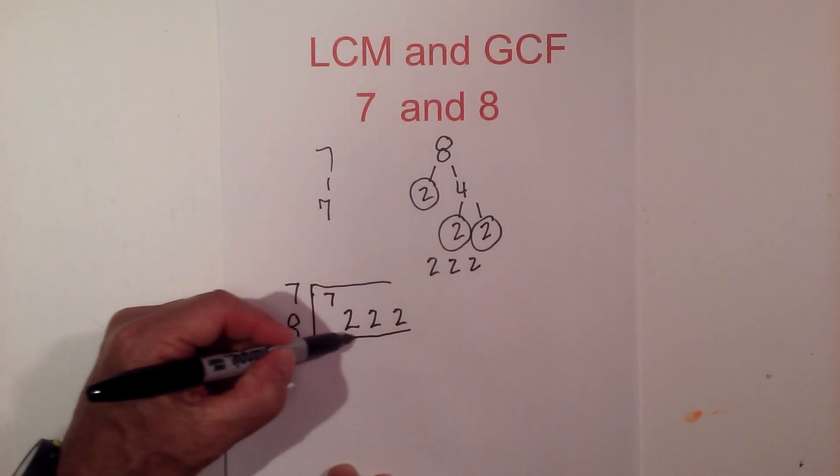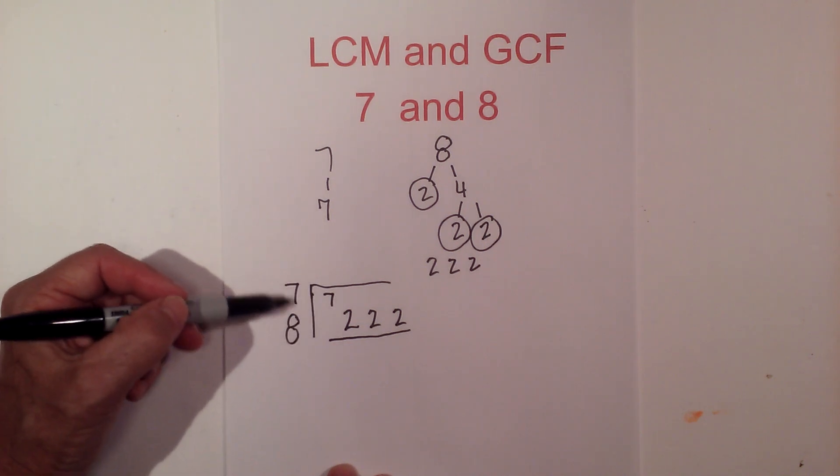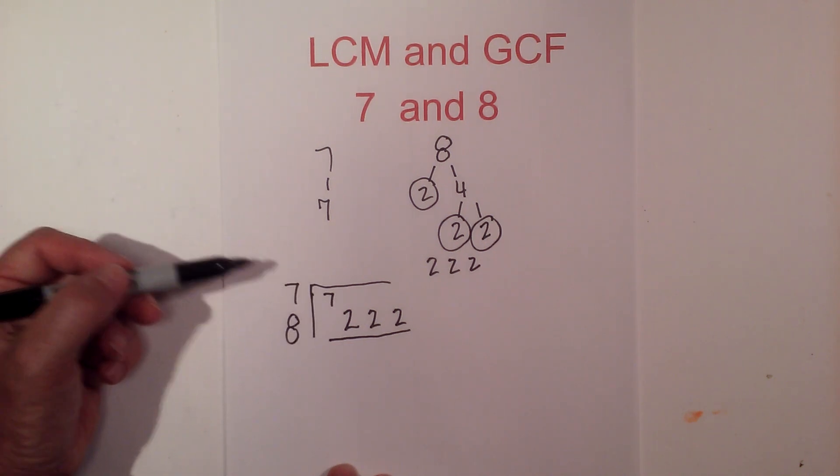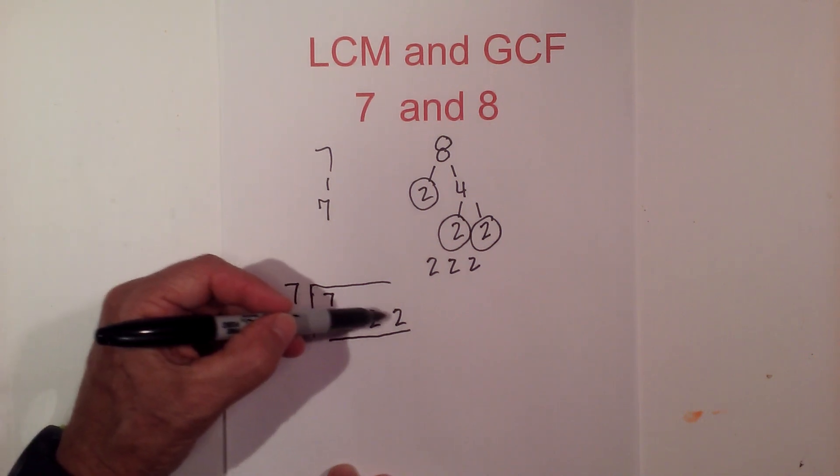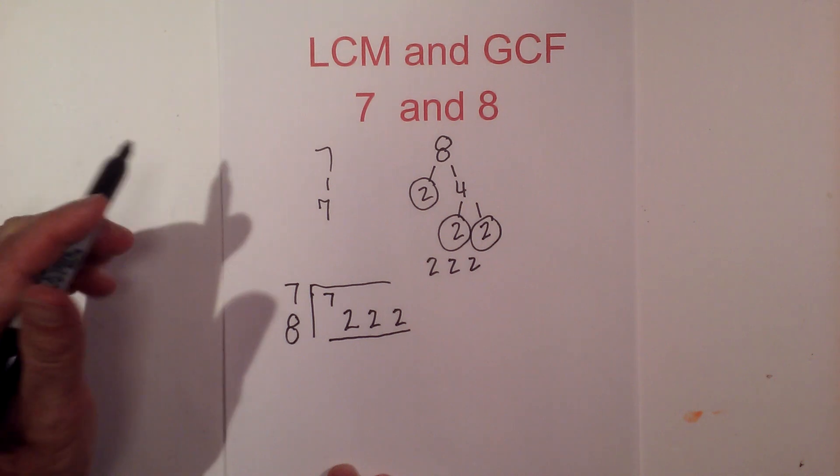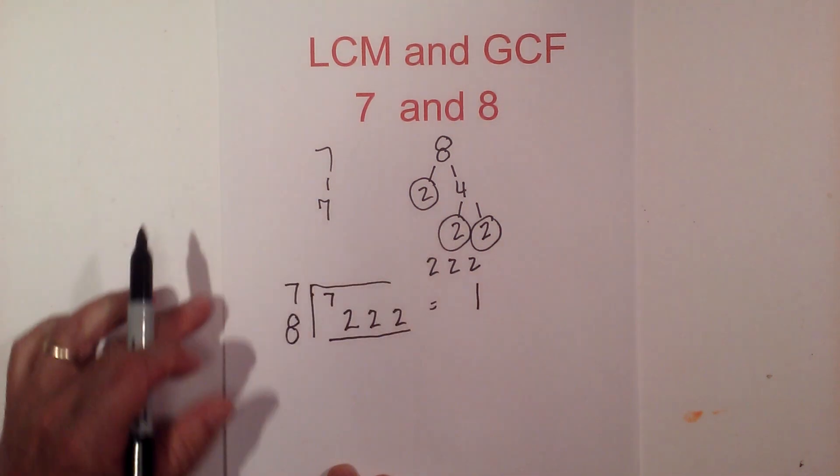Now for the greatest common factor, you bring down the numbers, but since you have two numbers, you have to have a vertical pair. We don't have a vertical pair here, here, here, or here. Since you do not have a vertical pair, the greatest common factor is 1.